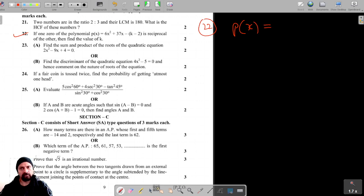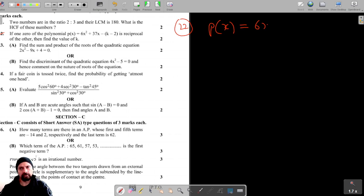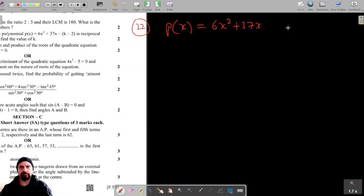Given polynomial is P(x) = 6x² + 37x - (k-2). Let's write down the respective coefficients: a is 6, b is 37, and c is equal to -(k-2).